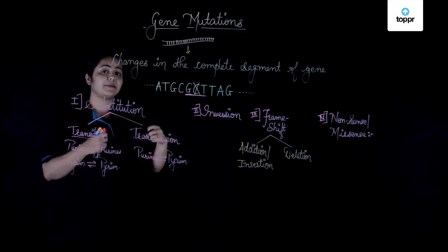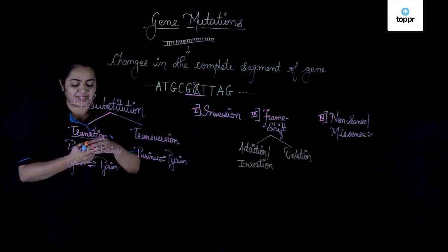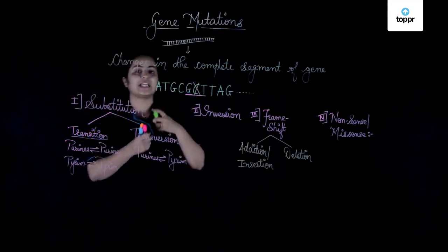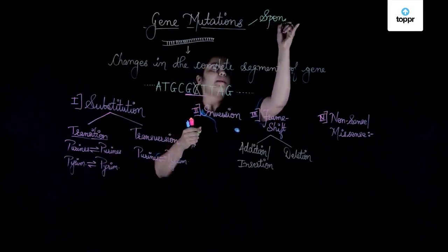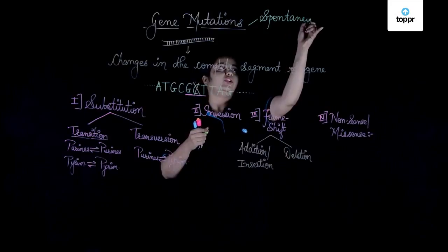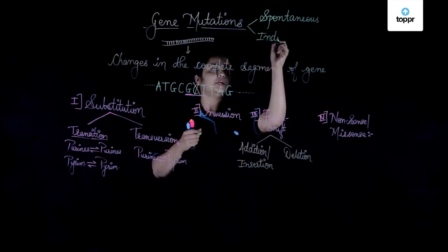These are basically the types of gene mutations that you find. These can either be spontaneously happening in us, right? Gene mutations can happen at any point of time. We don't know when they happened, right? So these mutations can either be spontaneous, yes, happening all of a sudden when we don't really know them, or they can also be induced in the particular organism.